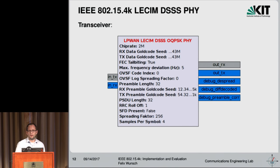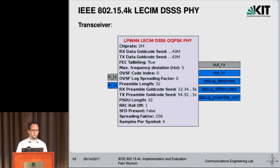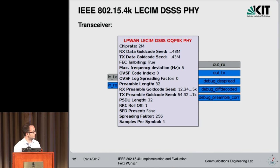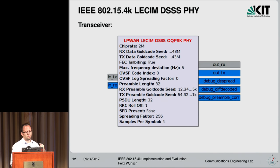This is the hierarchical transceiver block, inspired by the style of the GR-IEEE-802.15.4 module that Bastian Bloessl did. We have message ports which communicate with the upper layers, streaming complex baseband ports which communicate directly with the radio, as well as some debug ports. Of course, you can also configure the PHY layer to your heart's desire — you can change the spreading factor, the gold code seed, the preamble length, the payload length, and all that.